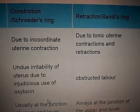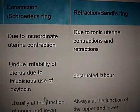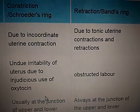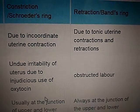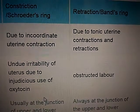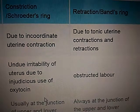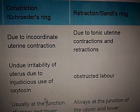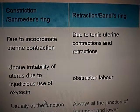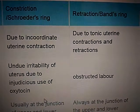Constriction ring, or Schroeder's ring, versus retraction ring, or Bandl's ring. The constriction ring is due to incoordinate uterine contraction, while the retraction ring is due to tonic uterine contractions and retractions. So incoordinate contraction produces the constriction ring, while tonic uterine contractions and retractions produce the retraction ring.